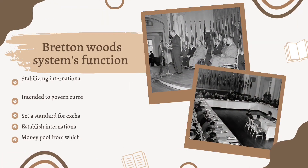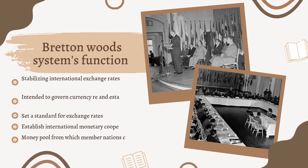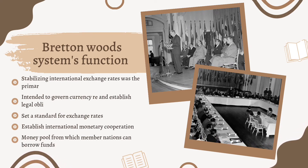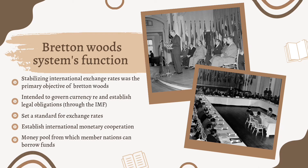The Bretton Woods system functions are: first, establishing international exchange rates, which was the primary objective; second, intended to govern currency and re-establish the legal obligation through the IMF; third, set the standard for exchange rate; fourth, established international monetary cooperation; and lastly, a money pool from which member nations can borrow funds.